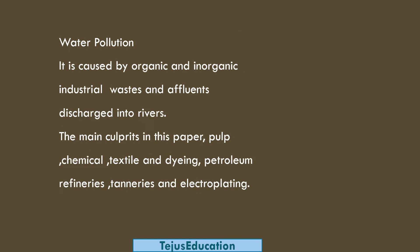Water pollution is caused by organic and inorganic industrial waste. Organic waste includes waste food, paper and cardboard; inorganic waste includes aluminum cans and bottles. Affluent — the waste from factories — is discharged into rivers. The main culprits are paper, pulp, chemical, textile and dyeing industries. Even petroleum refineries, tanneries and electroplating industries are also equally responsible for water pollution.